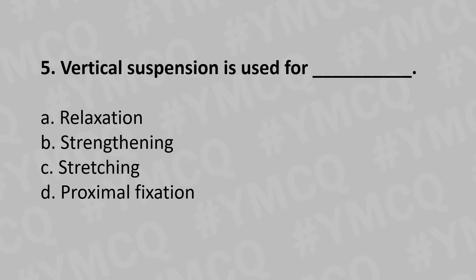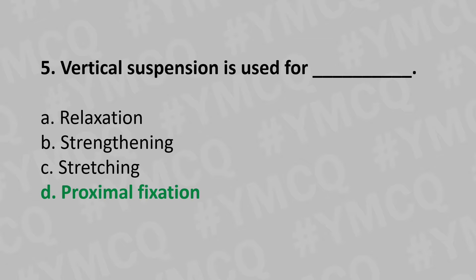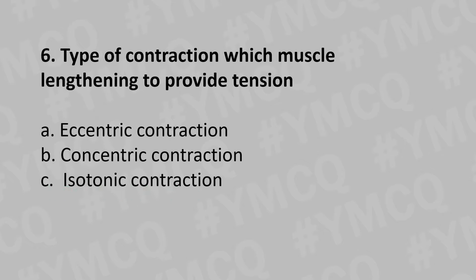Vertical suspension is used for: Option A: Relaxation, Option B: Strengthening, Option C: Stretching, Option D: Proximal fixation. And the answer is Option D: Proximal fixation. Moving to our sixth question: the type of contraction in which a muscle lengthens to provide tension.